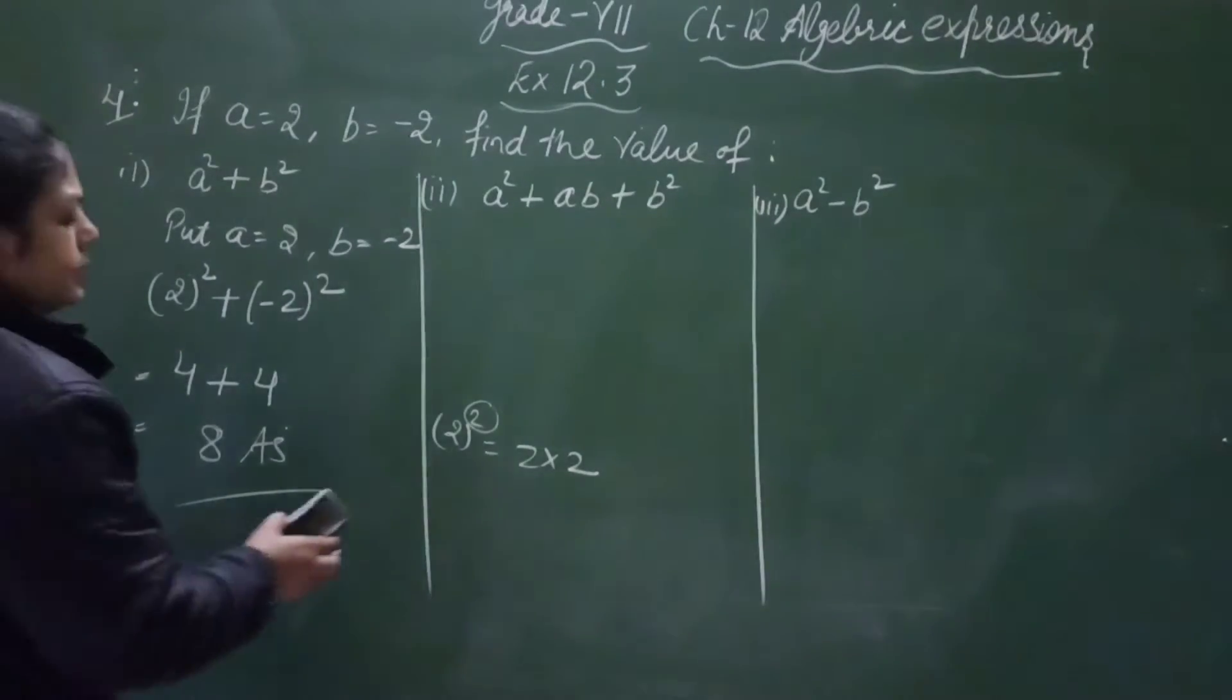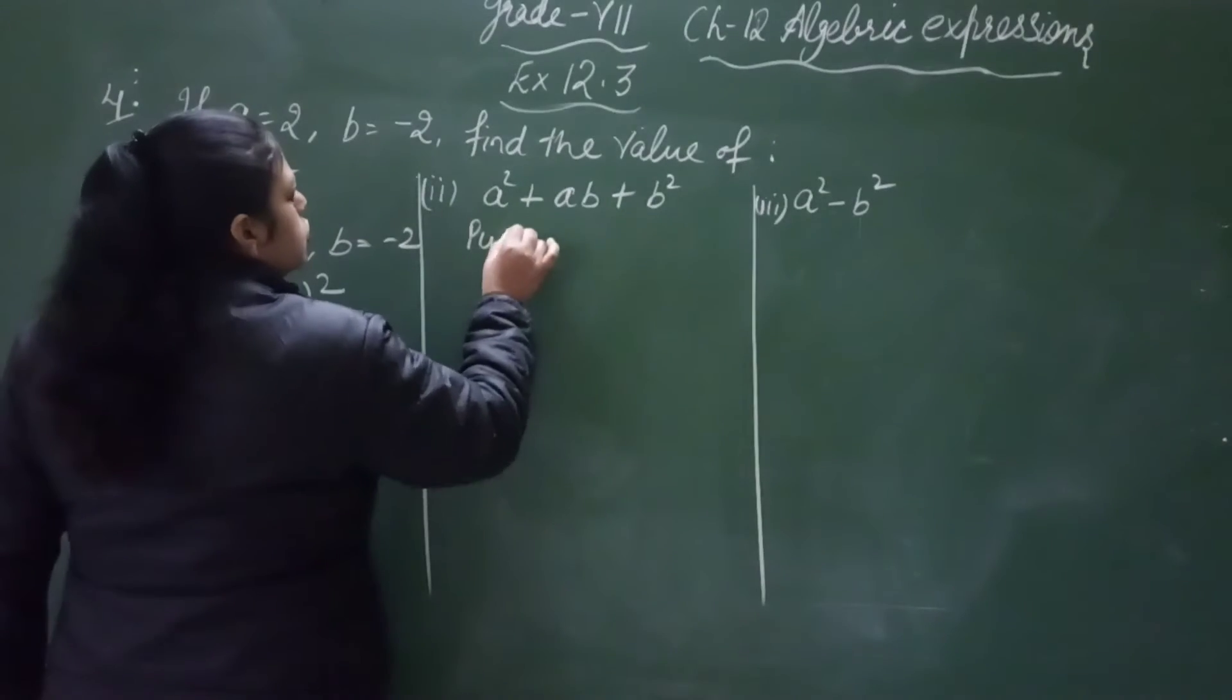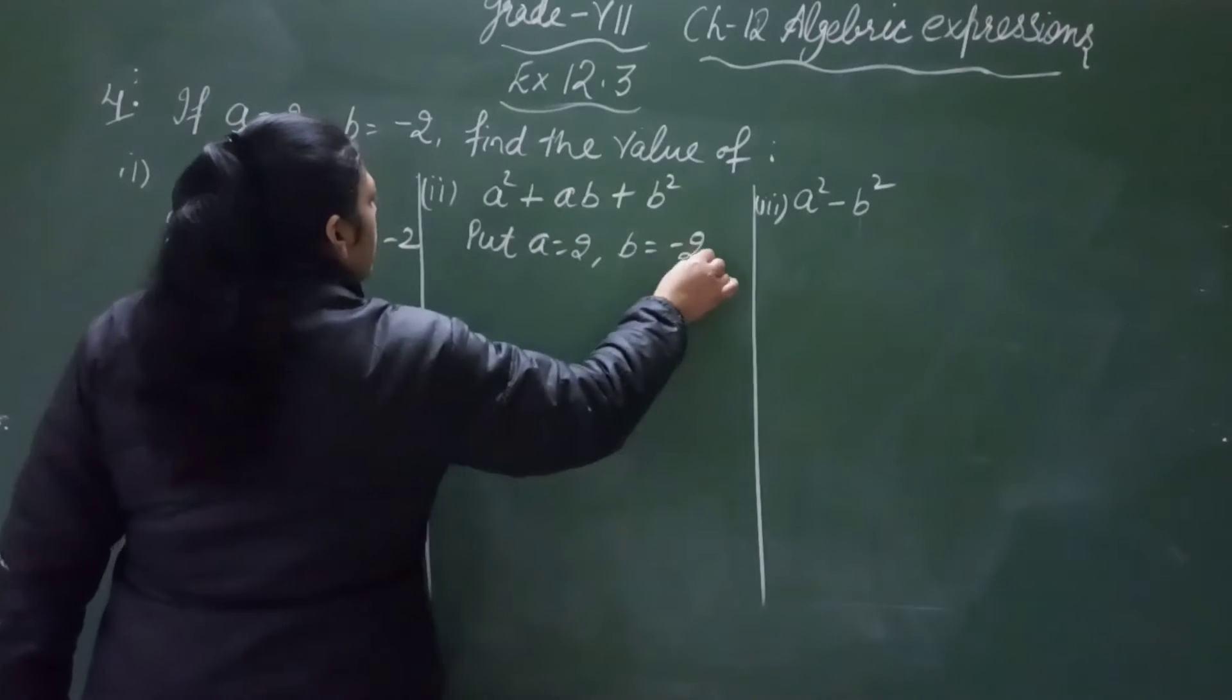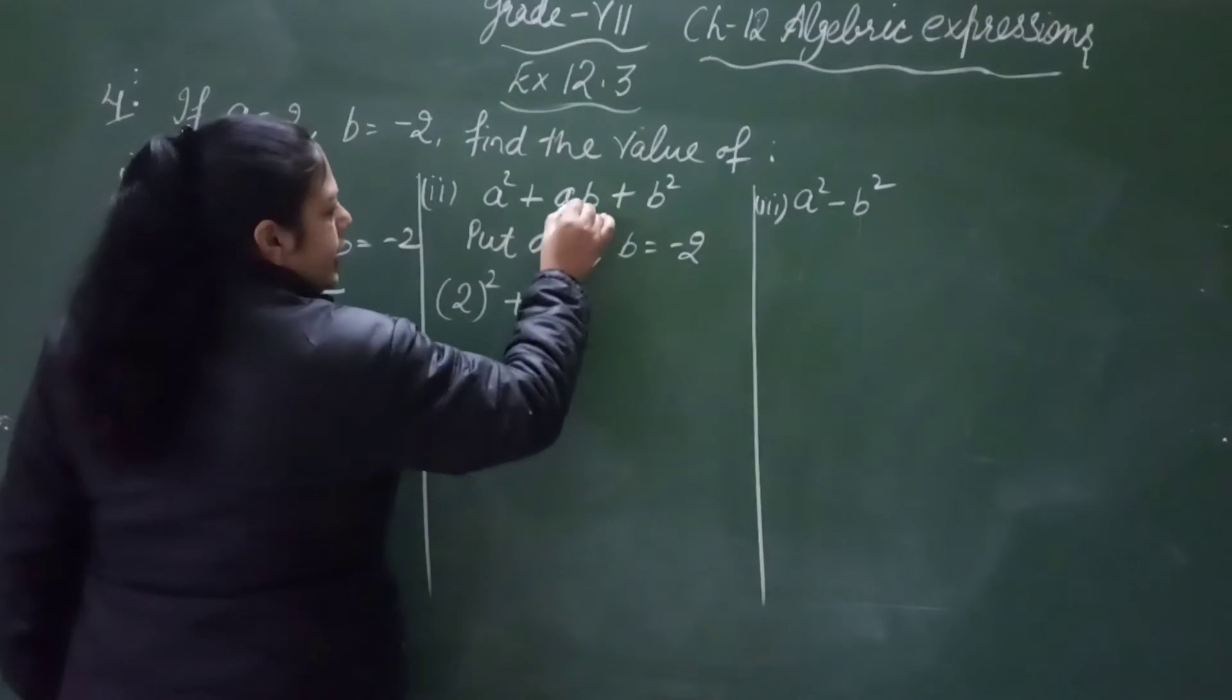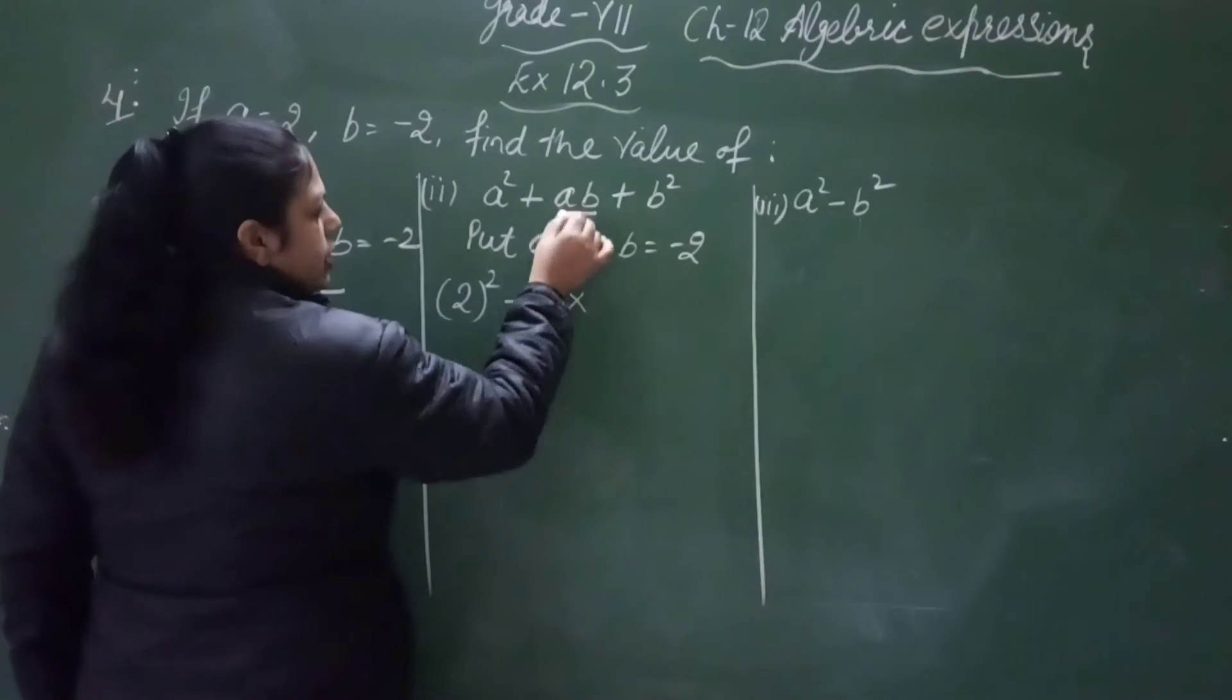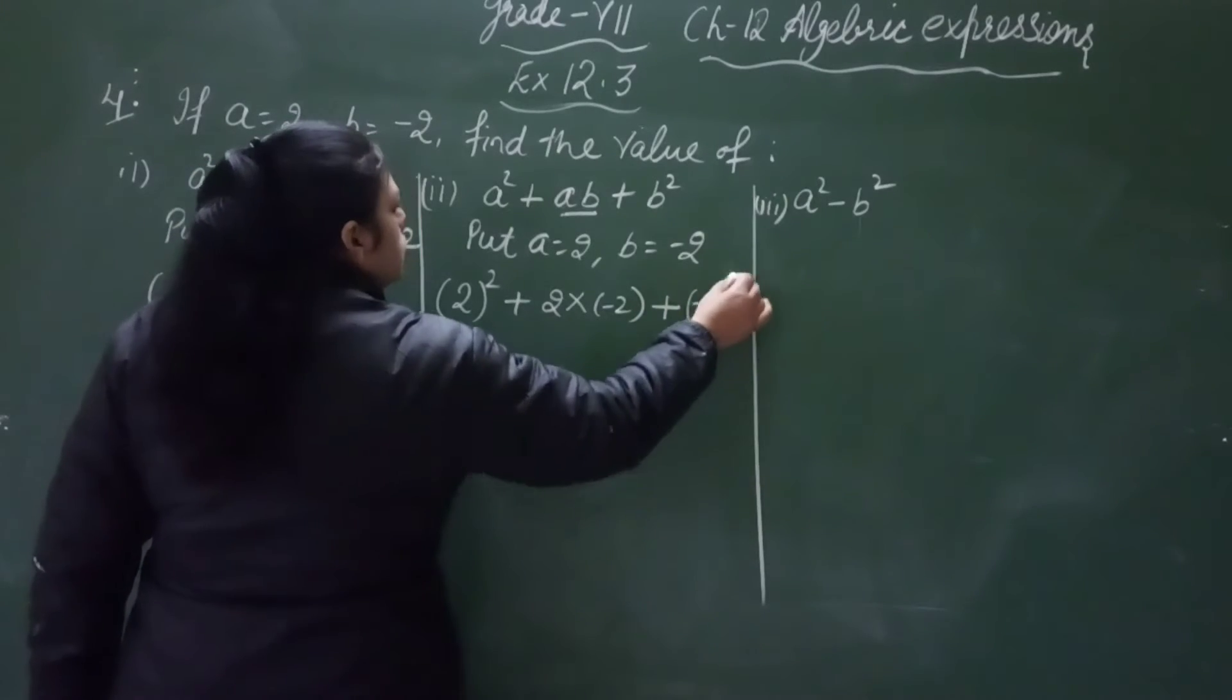Next is a square plus ab plus b square. Now I am putting a is 2 and b is minus 2. So we substitute the values: 2 square plus ab, ab means a multiplied by b, a's value is 2, b's value is minus 2, plus b square means minus 2 square.